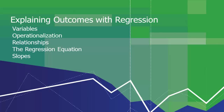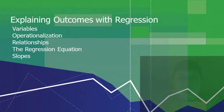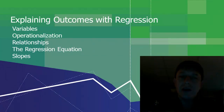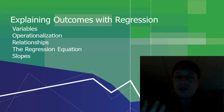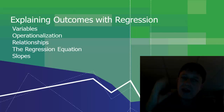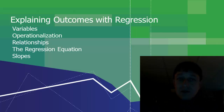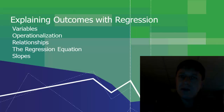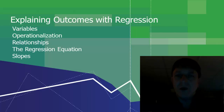Hello, this is James Cook, assistant professor of social science at the University of Maine at Augusta. In this video we'll be talking about variables, operationalization of variables, relationships between independent and dependent variables, looking at the regression equation and what that means, and looking more particularly at slopes in regression equations.